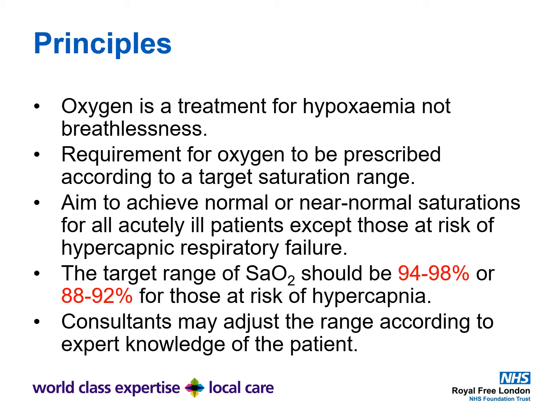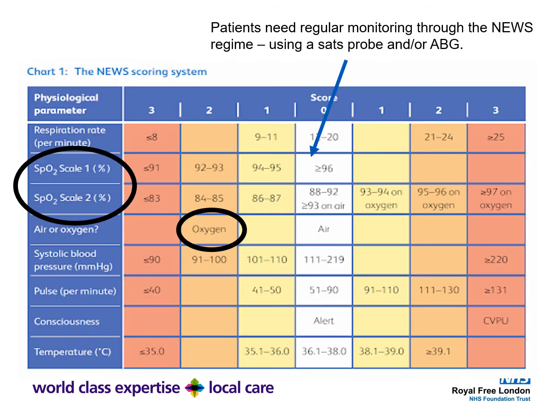Those with respiratory expertise — such as consultants and respiratory registrars — may adjust the range based on expert knowledge of the patient, particularly for those with pulmonary fibrosis. We follow the NEWS2 system for all acutely unwell patients. By default, as circled on the left, all patients should be on Scale 1 unless prescribed otherwise, usually in discussion with a registrar.